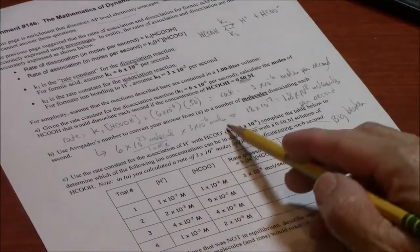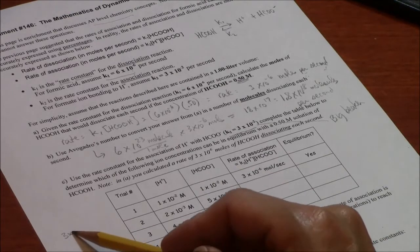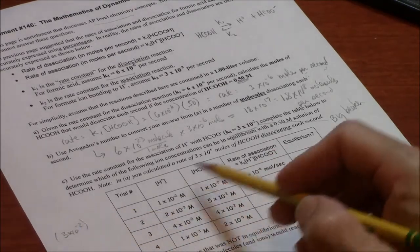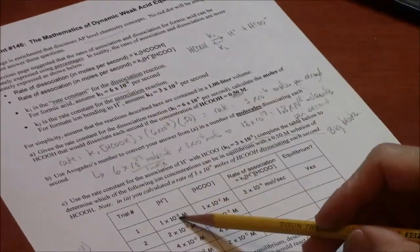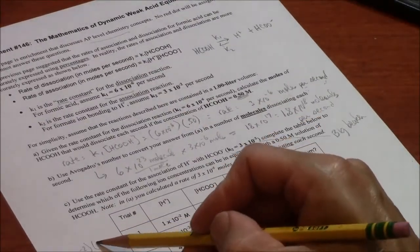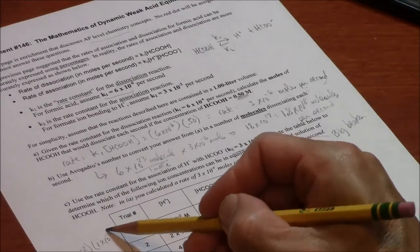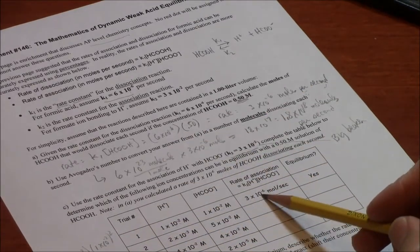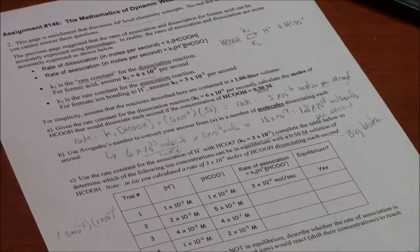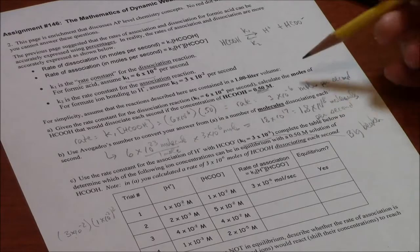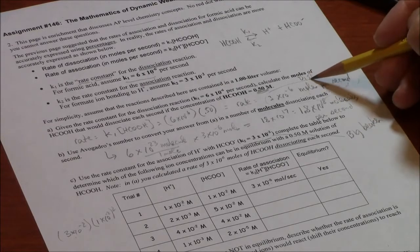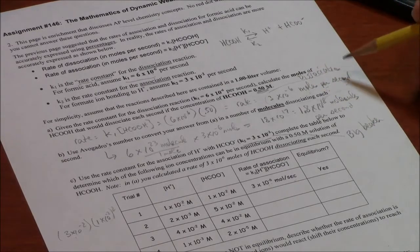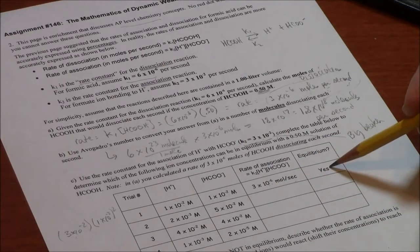So I'm hoping this first one makes sense to you. If we have K2 is 3 times 10 to the minus 2, and we're getting a rate, it's K2 times H+ times HCOO- molarity. So here they're both 1 times 10 to the minus 2, so I can say 1 times 10 to the minus 2 squared. And that comes out to be 3 times 10 to the minus 6 moles per second, which is equilibrium. It balances the rate of dissociation. Reassociation is equal. We have equilibrium.